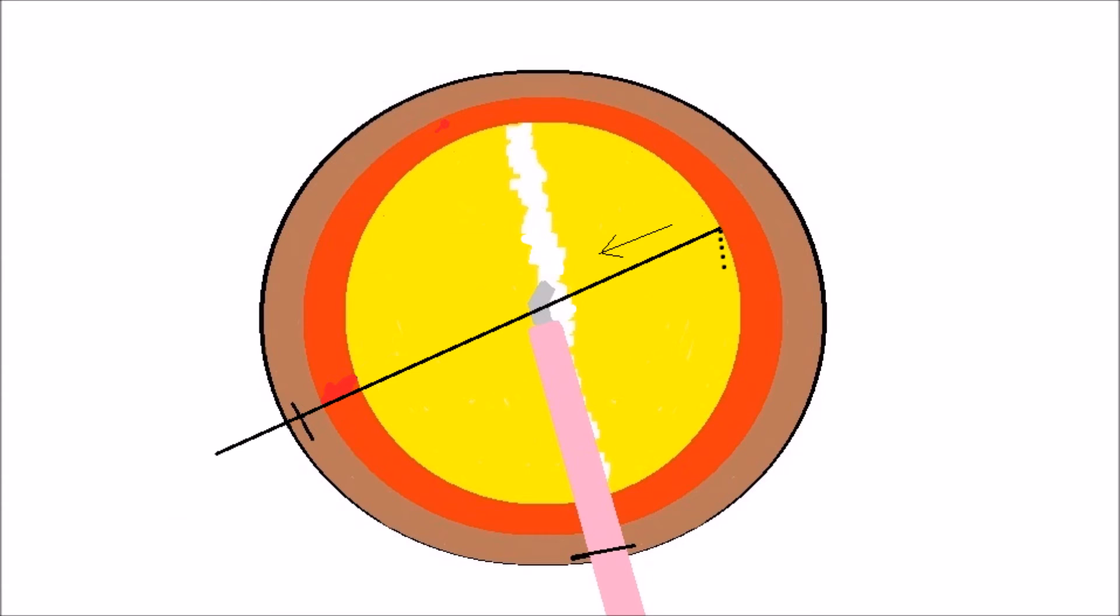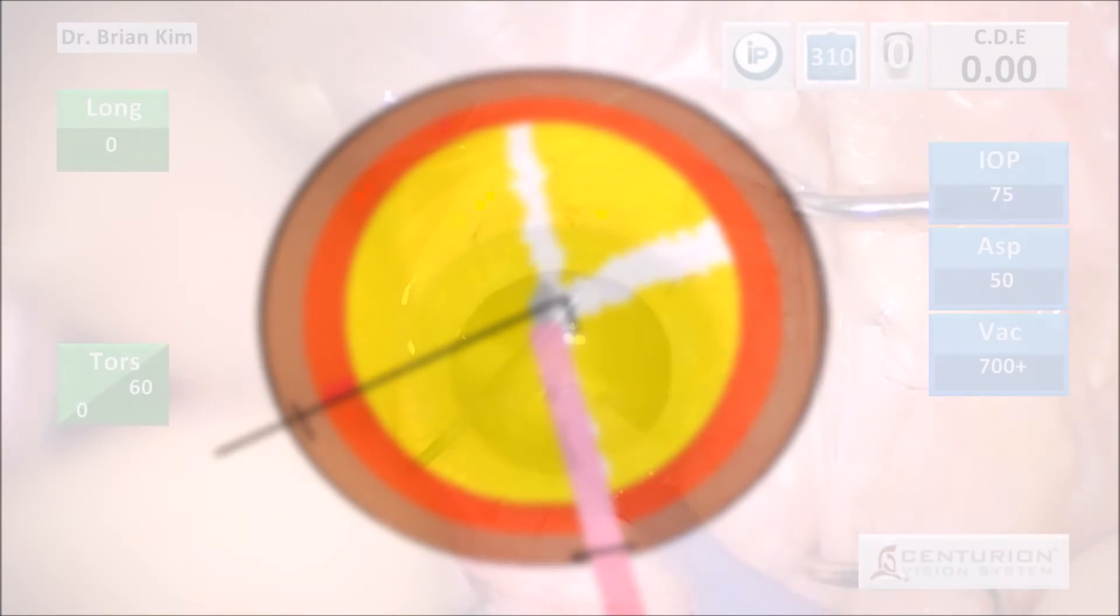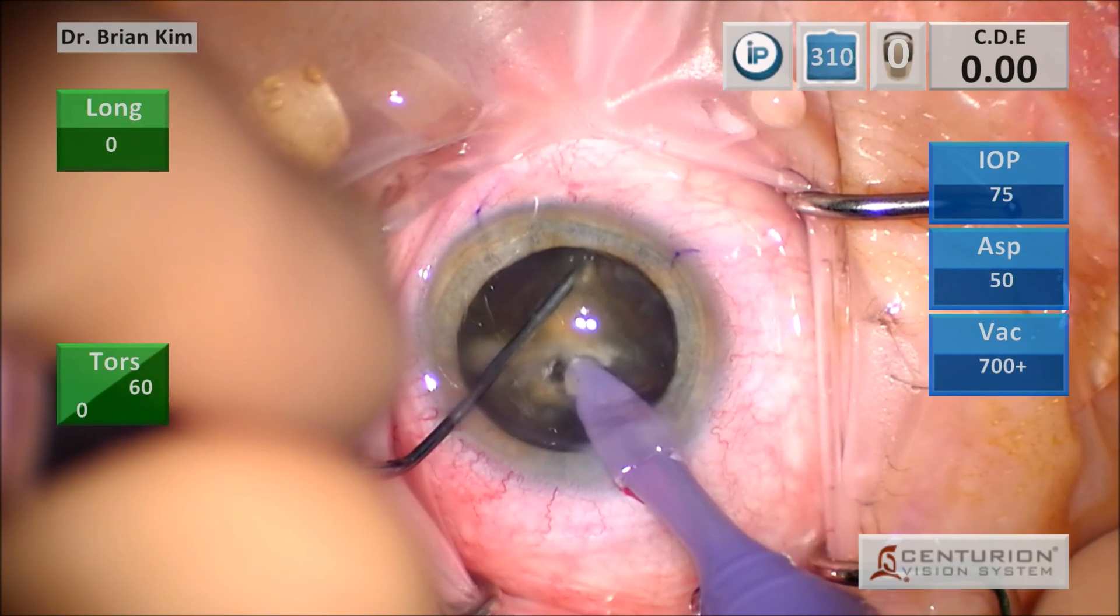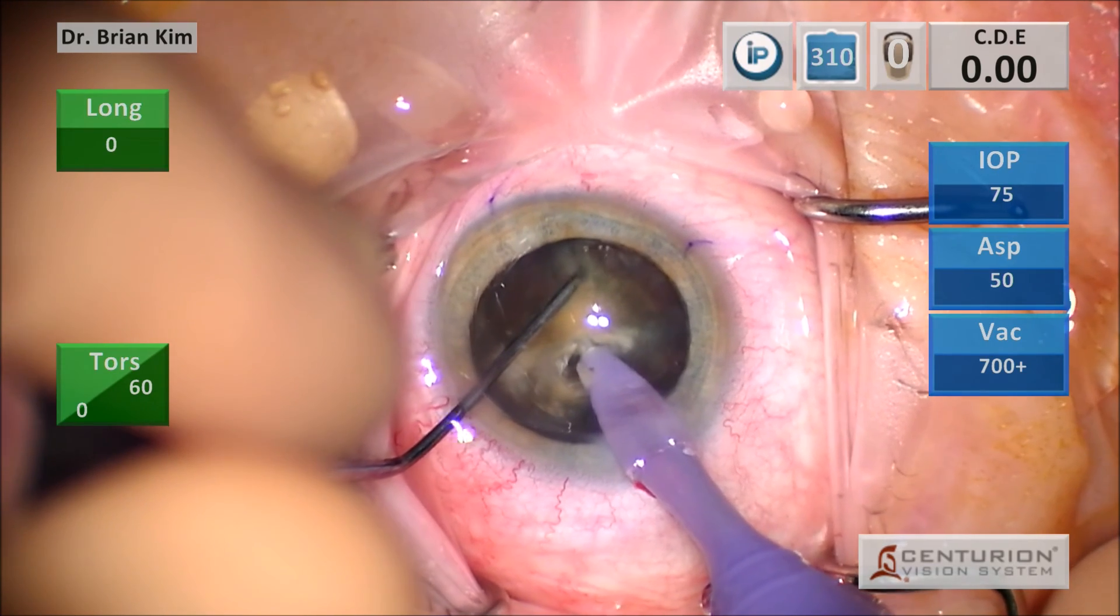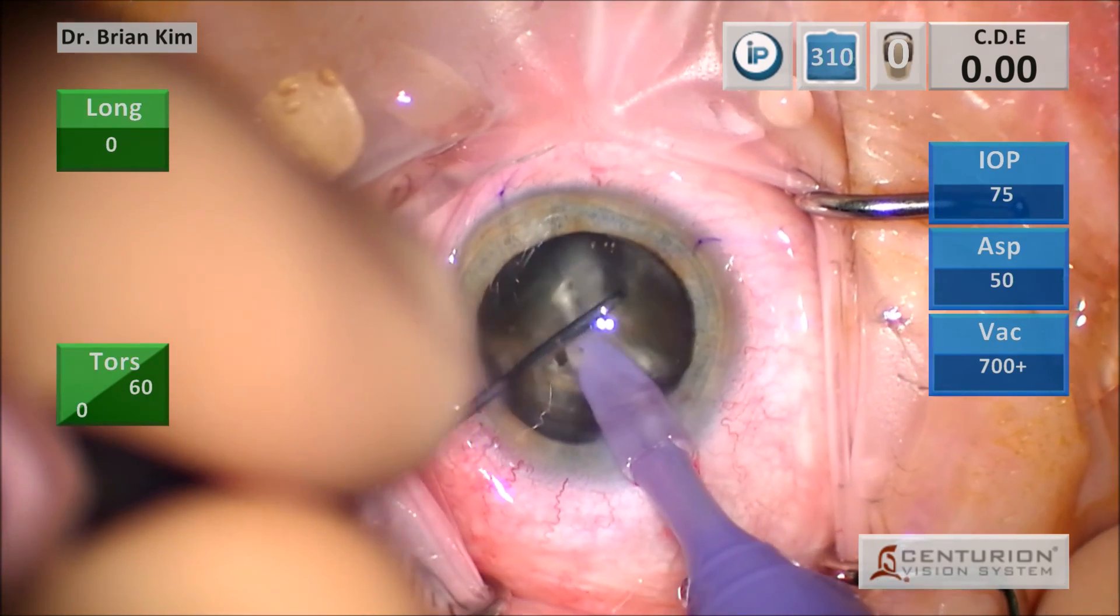This is a cross chop maneuver, where I placed a chopper out to the contralateral equator, bring it to the center to fracture that lens. That phaco tip is supporting the lens so that it doesn't move as I'm applying the forces to chop the lens by bringing the chopper centrally.